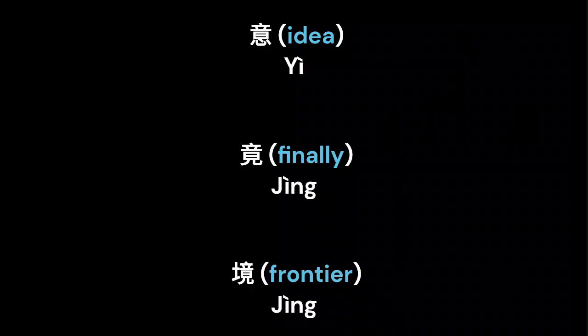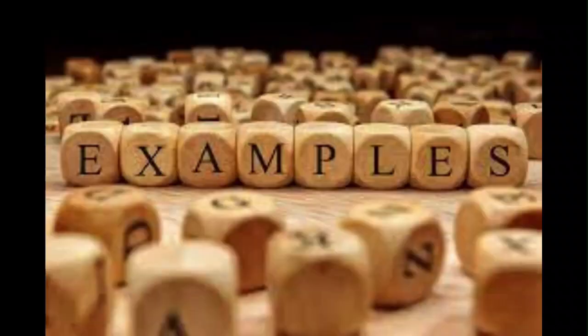In radical form, 音 (Yīn) is found in words such as 意 (yì) and 境 (jìng). This makes it an important character to learn. Now let's see some examples.